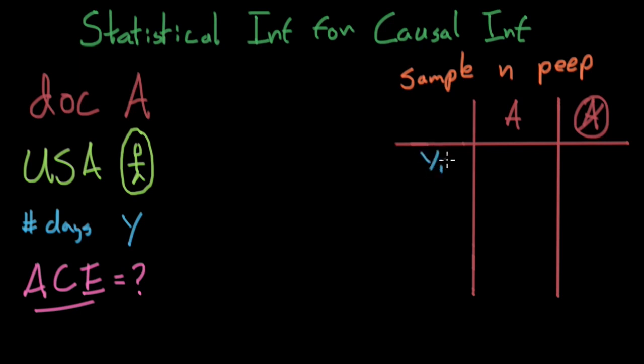So y sub one could be five days and then we don't know. Y sub two will be, we don't know because this person was subjected to not going to the doctor, and 10 days. And so on until we get y sub n. Let's get the little n, dot dot dot. Where this person went to the doctor and maybe was sick for 11 days and on the other case we don't know.